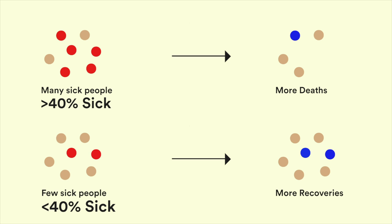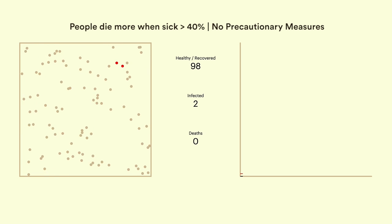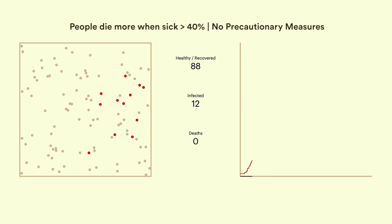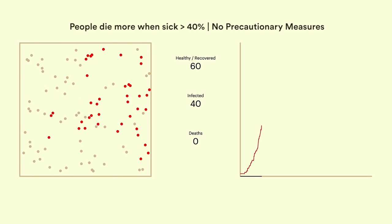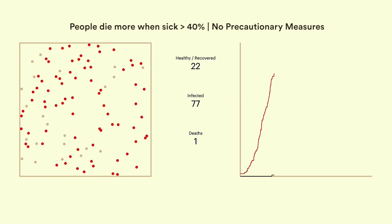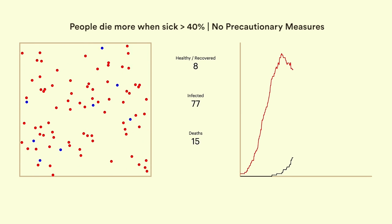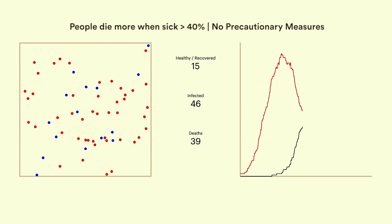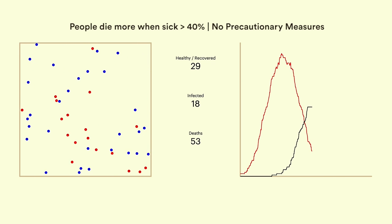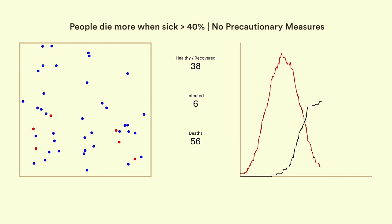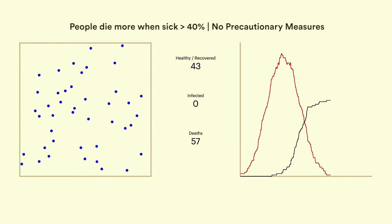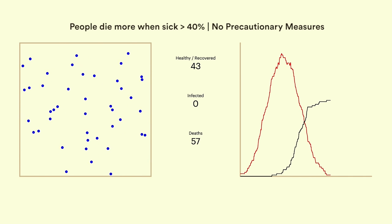A death will be shown by a dot disappearing and recovery will be shown by the dot turning blue. In this case, we are assuming that once a patient recovers, they will not get infected again. We see that deaths begin to rise as the infection graph crosses 40%. Large numbers of people die while few also recover. The population settles with 57% of humanity wiped out. Sure, the rate is exaggerated, but this number will act as our base metric.